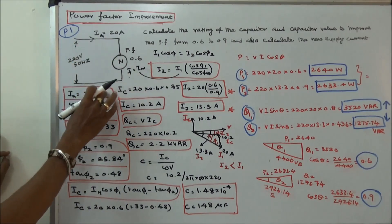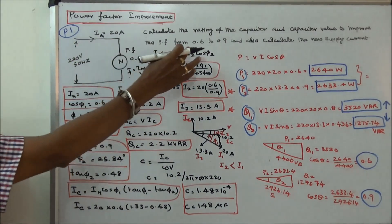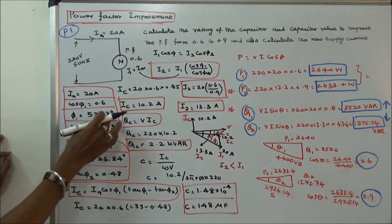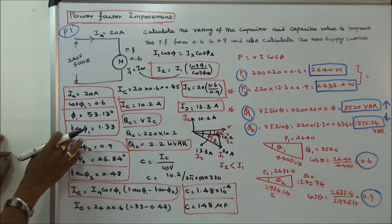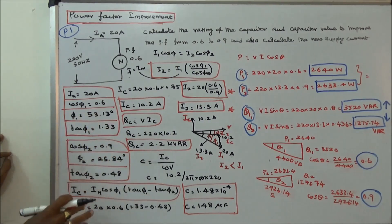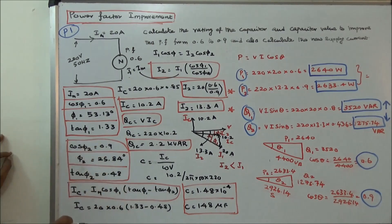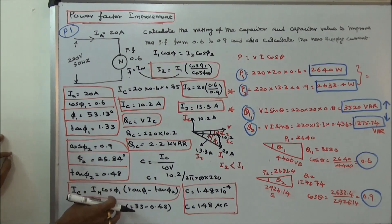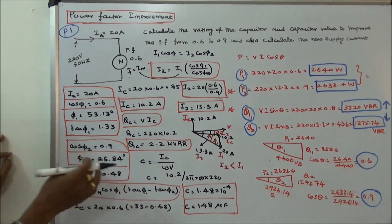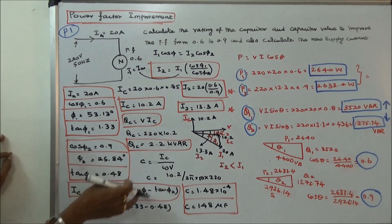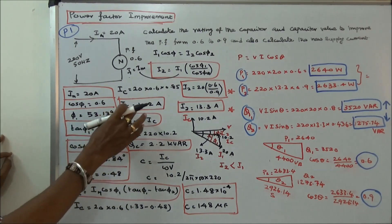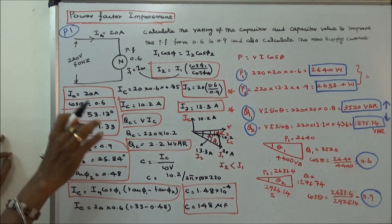Im is given as 20 amps (motor current). cos φ1 = 0.6, φ1 = 53.13°, tan φ1 = 1.33. cos φ2 = 0.9, φ2 = 25.84°, tan φ2 = 0.48. Using the formula: Ic = Im × cos φ1 × (tan φ1 − tan φ2), substituting all values, Ic = 10.2 amps — that is the current drawn by the capacitor.